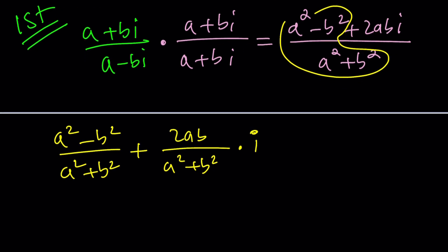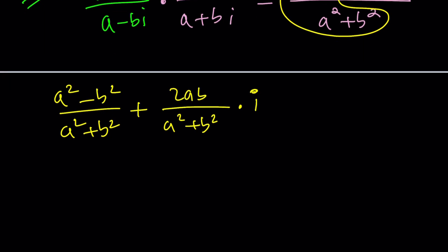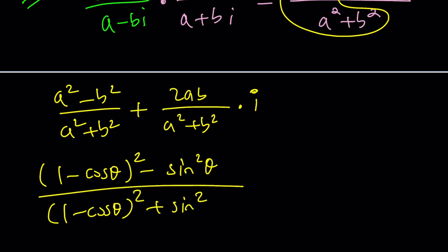What is A? 1 minus cosine theta. Let's do that. 1 minus cosine theta. We need to square that minus sine theta. Remember, B was sine theta. So that's going to be sine squared theta. And at the bottom, we're just going to have their sum. And then here, we're going to have 2AB divided by A squared plus B squared again.